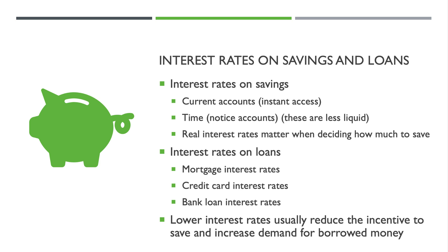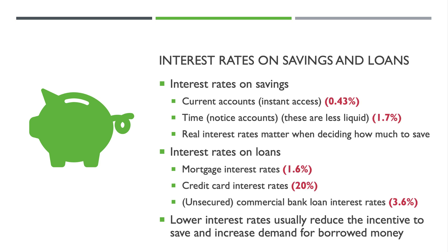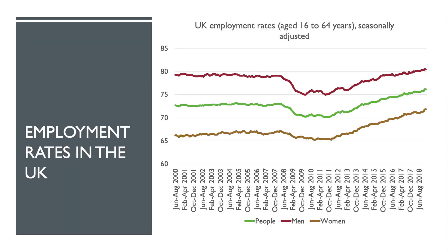Typically when interest rates are low, the demand for savings goes down — people save less — and the demand for credit goes up, and vice versa when interest rates start rising. At the moment, interest rates on savings are particularly low: current accounts offer less than half a percent on average, which is less than inflation, so in real terms the return on saving is negative. Even notice accounts offer less than two percent. Mortgages are quite cheap at the moment — less than two percent — but credit card rates average around twenty percent, and unsecured bank loans are nearly four percent.